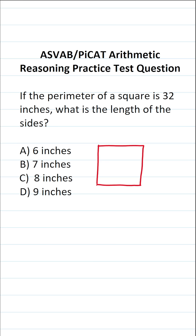I want to talk about some general properties of squares you should know from middle school, and using those general properties, we'll go ahead and derive the formula ourselves. As you may recall, all the sides in a square are equal, and we refer to the side length of a square using the letter variable S. So if this side is S, all these other sides are S.